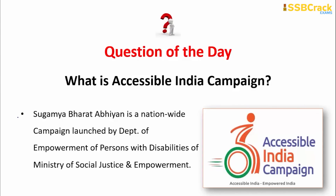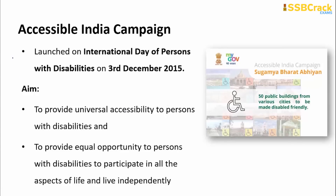The Accessible India Campaign is also known as Sugamya Bharat Abhiyan. It is a nationwide campaign launched by the Department of Empowerment of Persons with Disabilities, which comes under the Ministry of Social Justice and Empowerment. It was launched on the International Day of Persons with Disabilities on 3rd December 2015. The aim is to provide universal accessibility to persons with disabilities and equal opportunity to participate in all aspects of life and live independently.